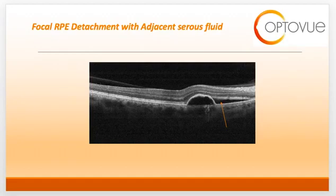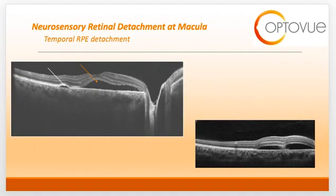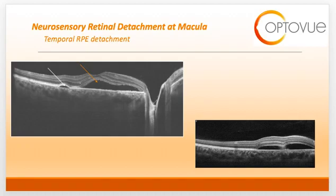This slide demonstrates a serous PED with an adjacent hypo-reflective area of serous fluid in the subretinal space. Whenever you have a pigment epithelial detachment with an adjacent area of serous fluid, you need to rule out the presence of a choroidal neovascular membrane. The OCT on the left shows a serous PED alongside a neurosensory detachment. The white arrow points at the serous PED and the orange arrow at the neurosensory detachment. Note that in the PED the RPE is elevated, while with the neurosensory detachment the RPE has stayed in place. On the bottom right, you can see a bilobed serous detachment with exudation in the center.